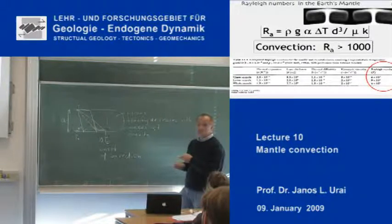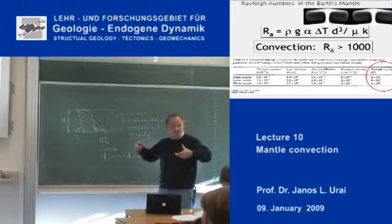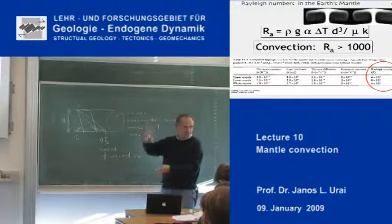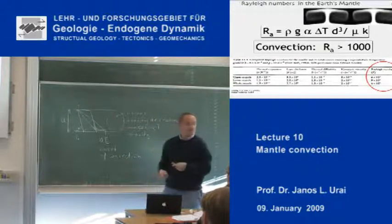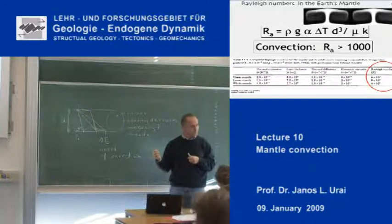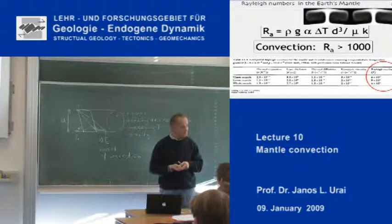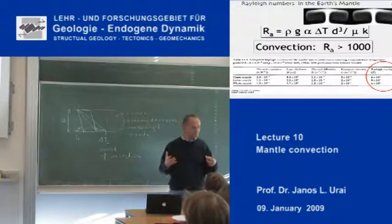This dimensionless number will get higher if gravity is high, if the material expands very much when you heat it up, if the temperature gradient is high, and if the layer is very thick. It will get lower if the viscosity is high and if the thermal conductivity is very high. And if this number is more than about 1,000, the fluid will start spontaneously to convect. There is nothing you can do about it — it will spontaneously arise.